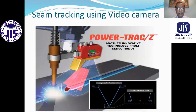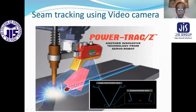Seam tracking using video camera. This may be a plasma welding setup with a laser. The video camera allows operators to observe how the welding is progressing. This is another innovative technology from servo robots, demonstrating automatic welding being done.